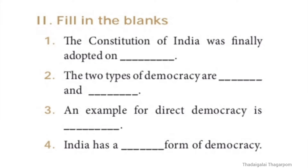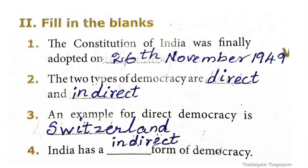Roman numeral two: fill in the blanks. First question: the Constitution of India was finally adopted on 26th November 1949. Second question: the two types of democracy are direct and indirect democracy.